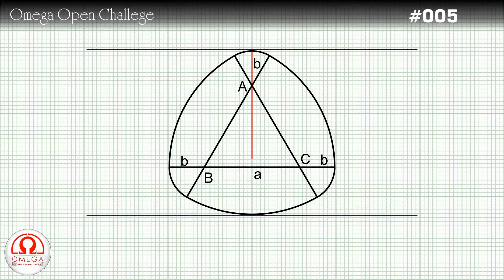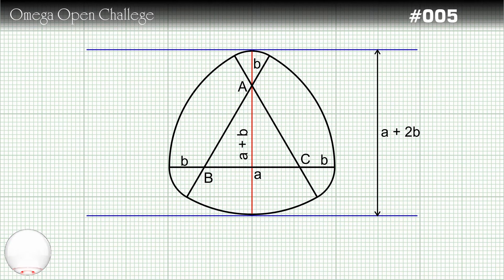Similarly, the perpendicular distance of the lower tangent from A is equal to the radius of the larger arc, that is A plus B. Therefore, the distance between the tangents is A plus A plus B, or A plus 2B.